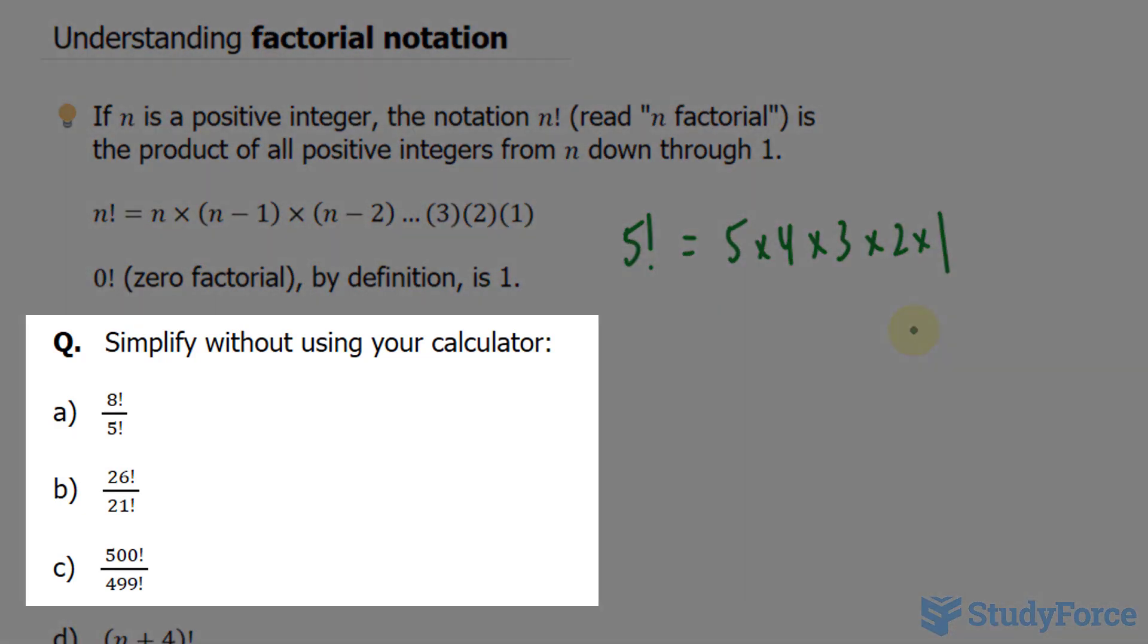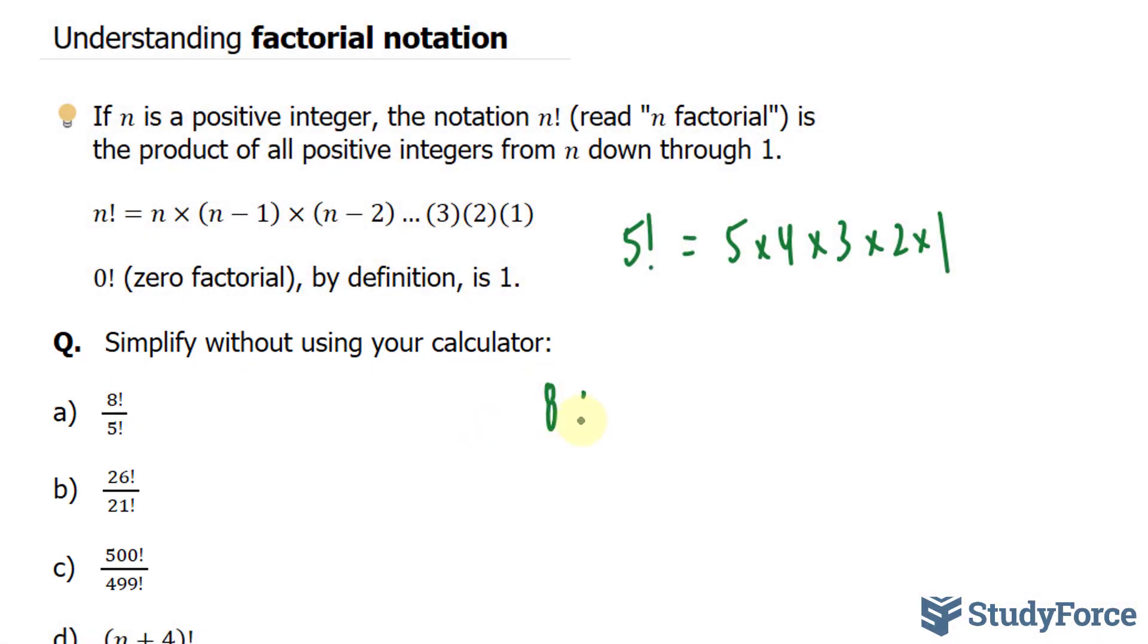The question reads, simplify without using your calculator. We have 8 factorial over 5 factorial. So what I'll do is expand the top, I have 8 times 7 times 6 times 5. And I'll stop right there, I'll write this down as factorial. And at the bottom I have 5 factorial.